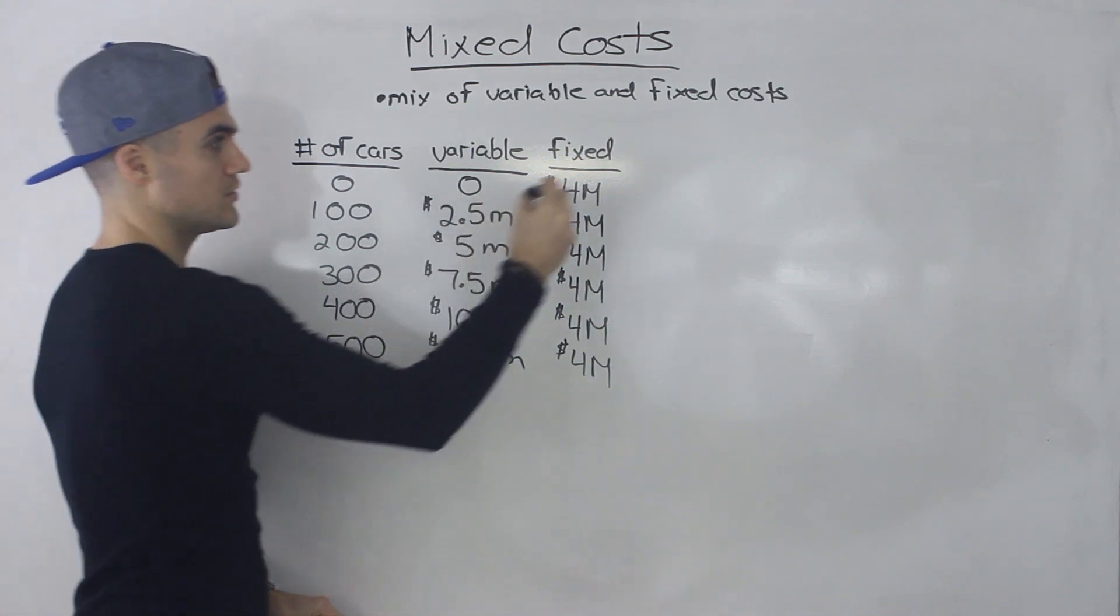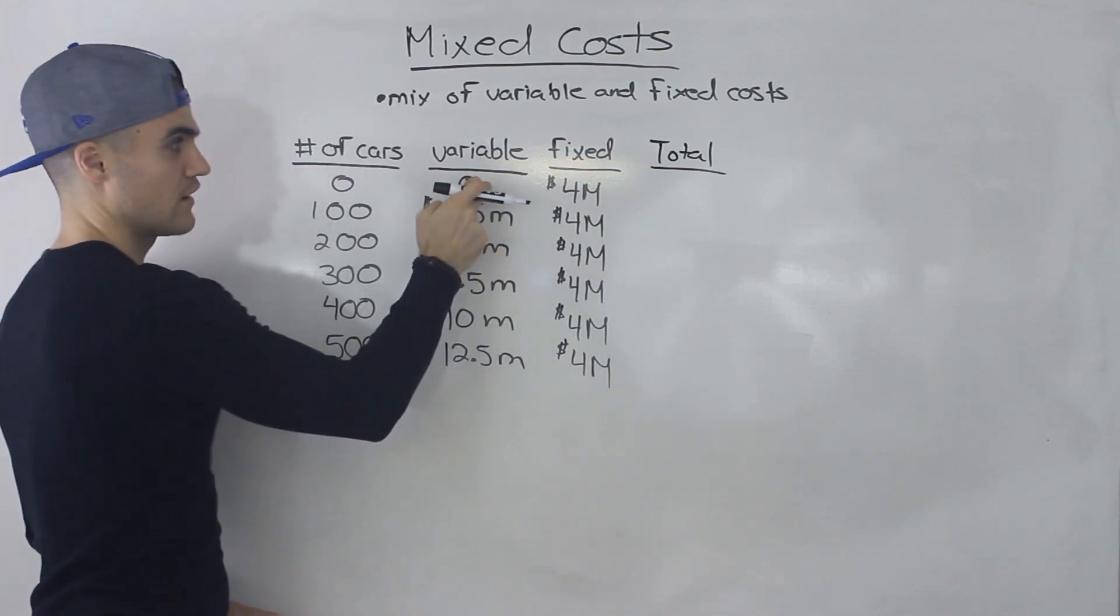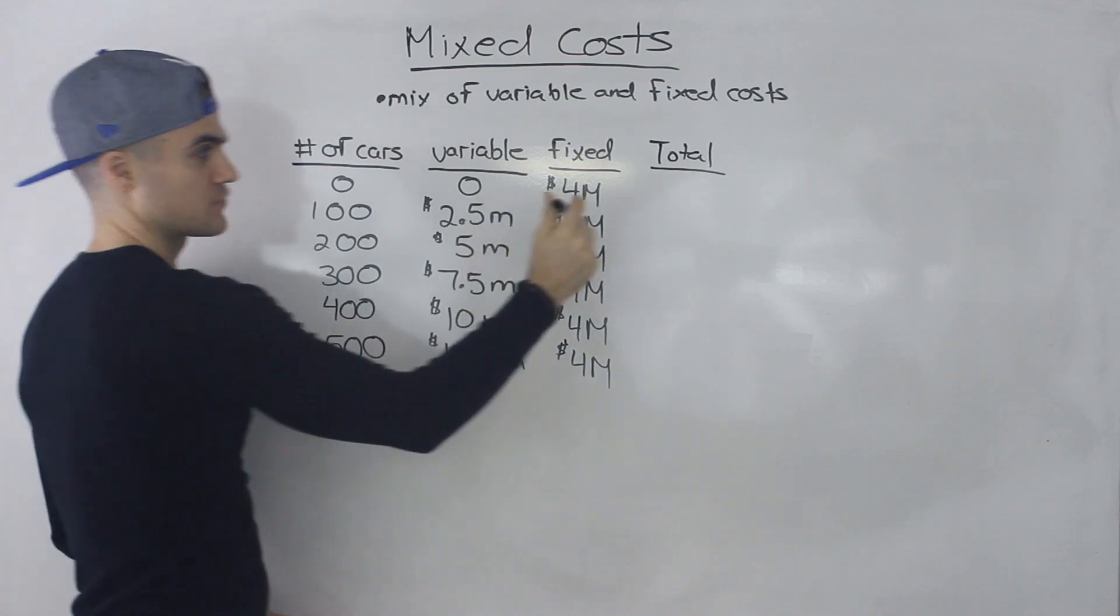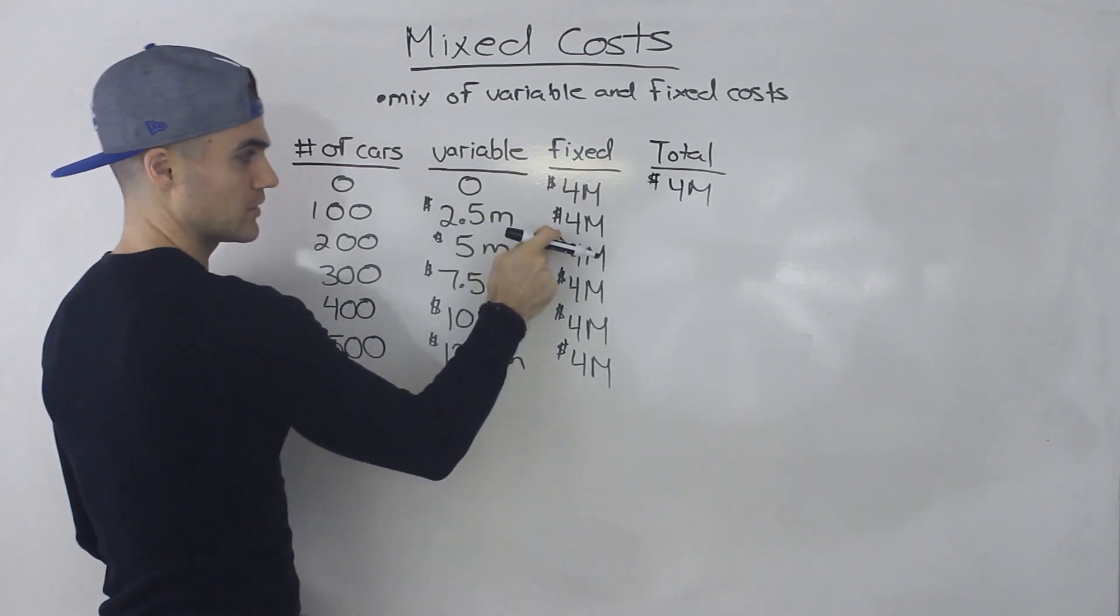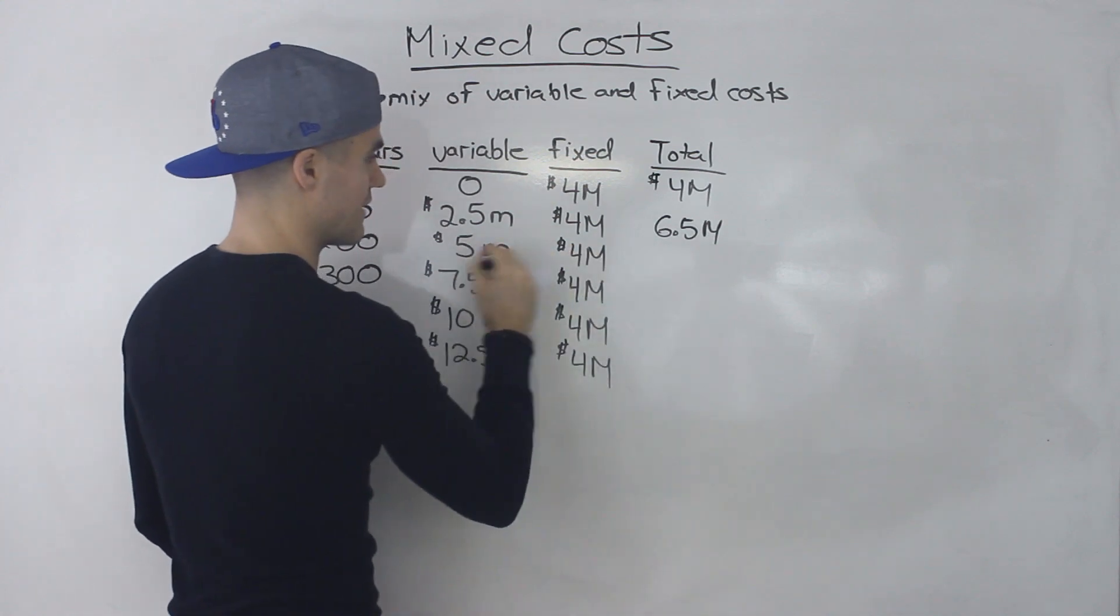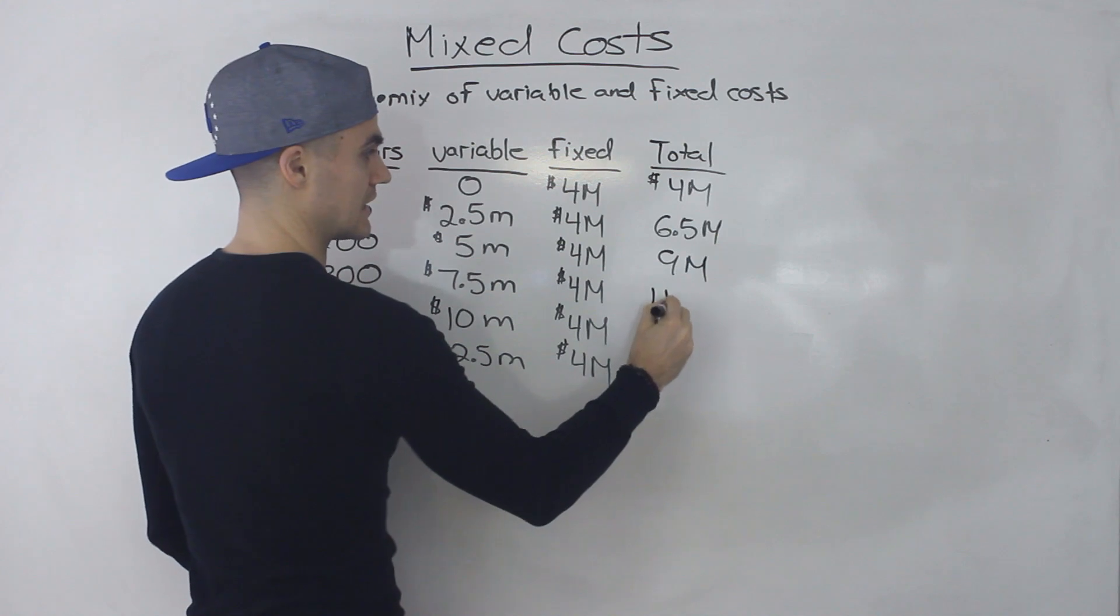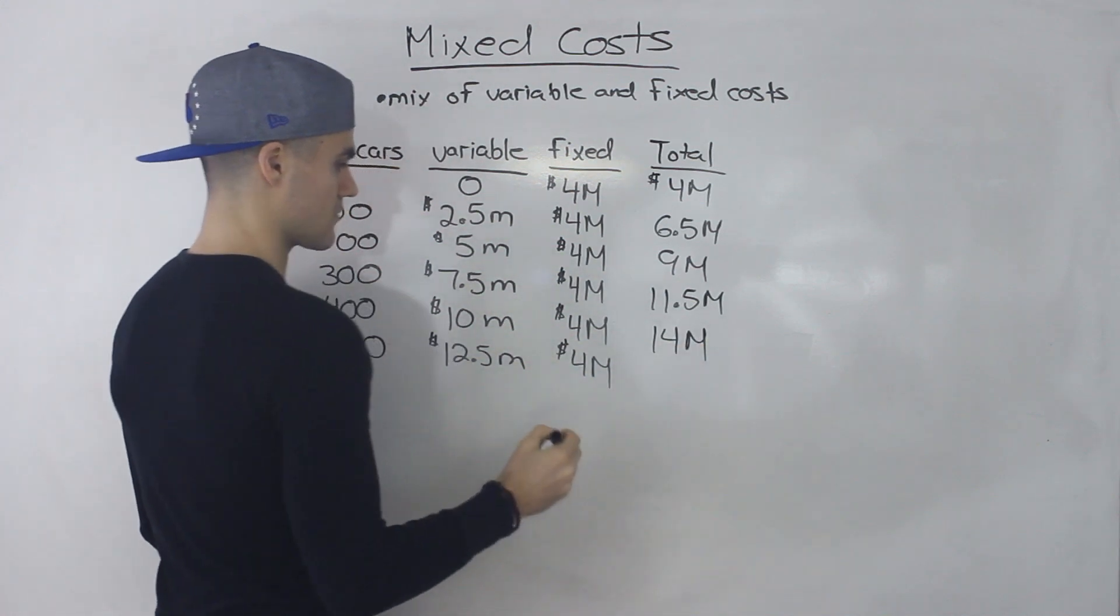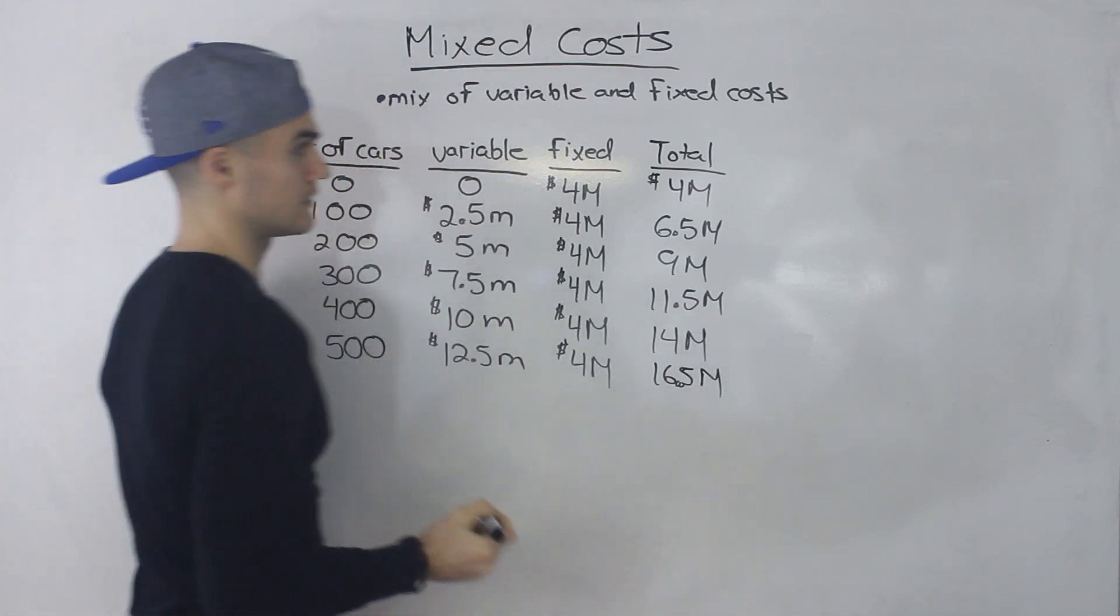And so with mixed costs, what you're going to be doing is you're actually going to be taking the total of the variable and the fixed costs for a certain output. So here's 0 plus 4, that would give us 4 million. These Ms, by the way, they represent millions. And then 2.5 million plus 4 million, that would give us 6.5 million. 5 million plus 4 million, that would give us 9 million. 7.5 plus 4, that would give us 11.5 million. And then we'd have 14 million and then 16.5 million.